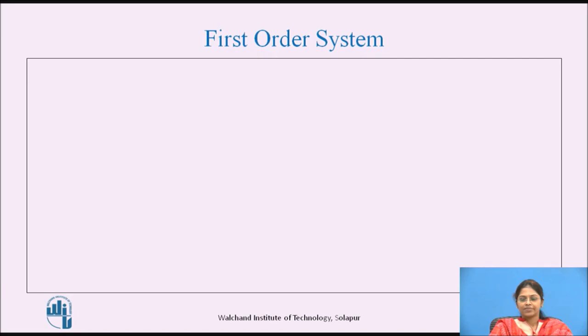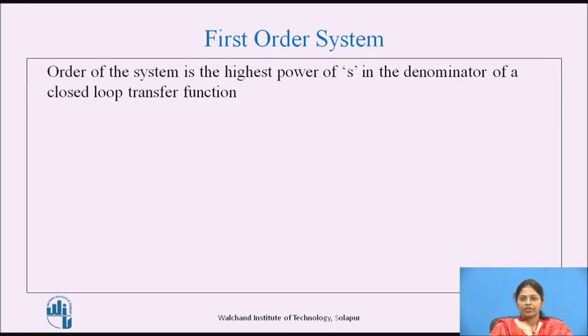First Order System. Let's understand what we mean by the order of the system. The order of the system is the highest power of s in the denominator of a closed loop transfer function.